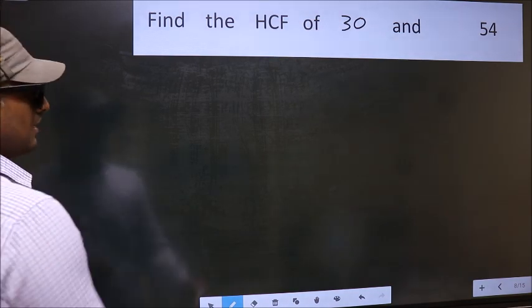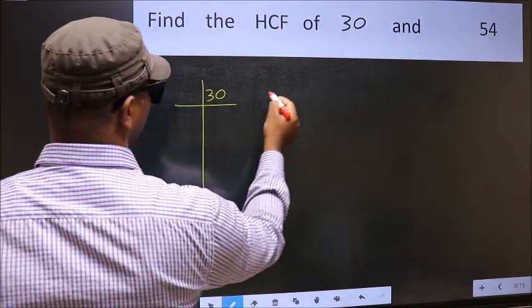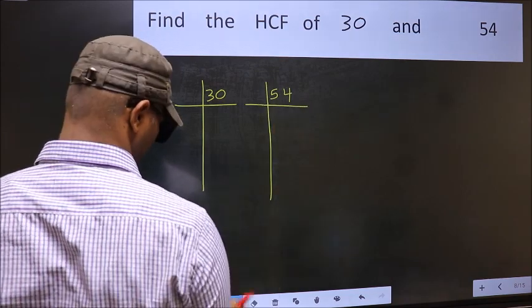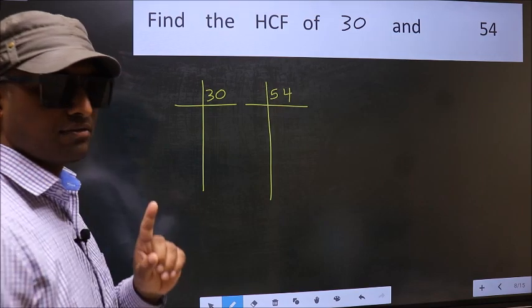What I mean is 30 and 54. This is your step 1.